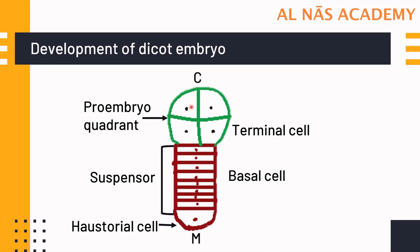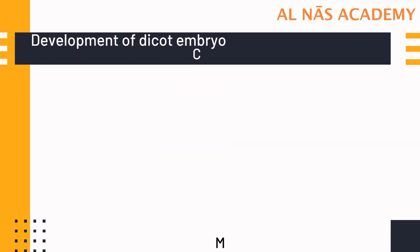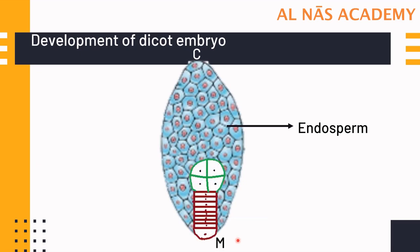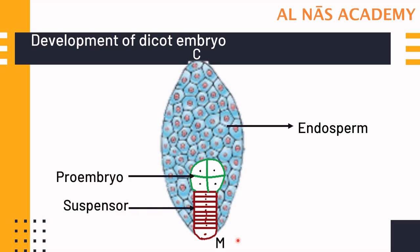The pro-embryo quadrant has four cells. To understand the role of the suspensor, consider the anatropous ovule: the zygote divides at the micropylar end, the suspensor is formed, it elongates, and pushes the embryo into the nutritive tissue, which is the endosperm. So from the basal cell we get the suspensor and haustorial cell, and from the terminal cell we get the embryo.